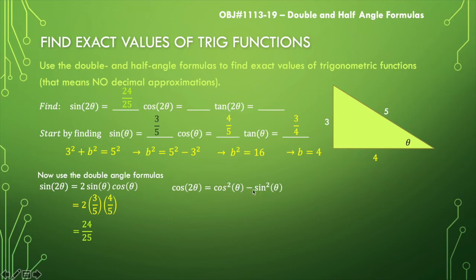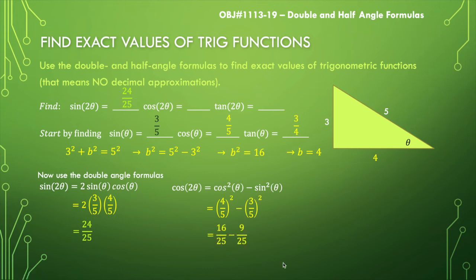So we have four-fifths squared minus three-fifths squared. Squaring those gives 16 over 25 minus nine over 25. With common denominators, we just take 16 minus nine over 25, which gives us seven over 25.